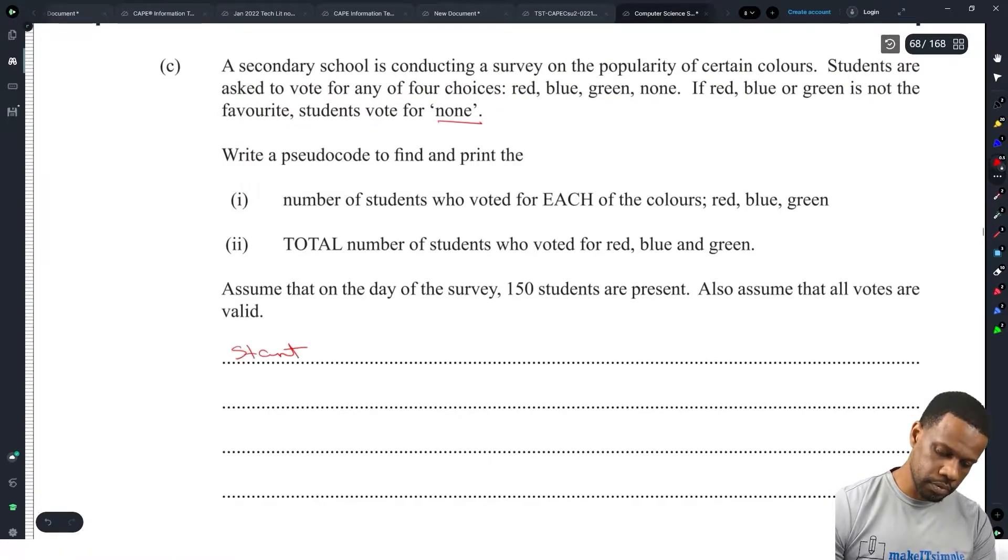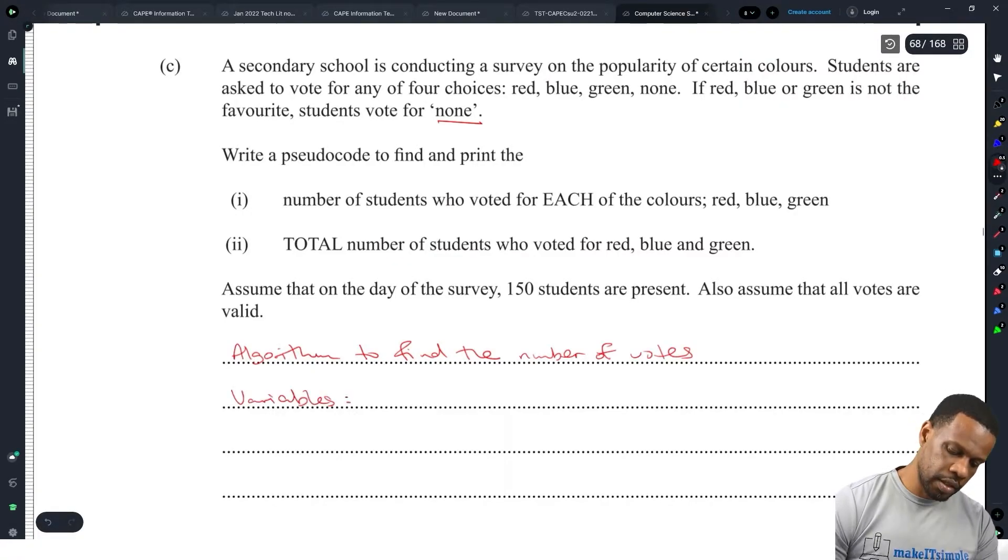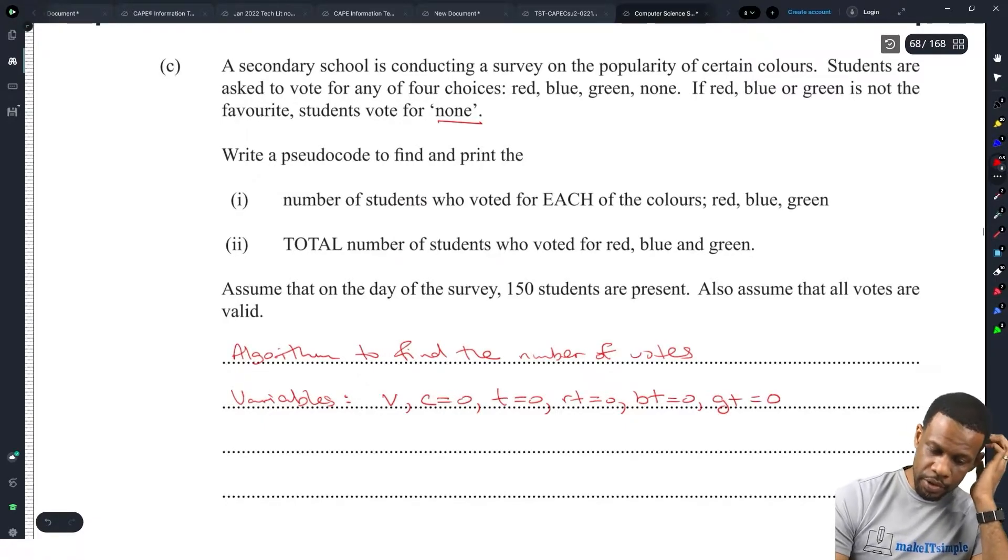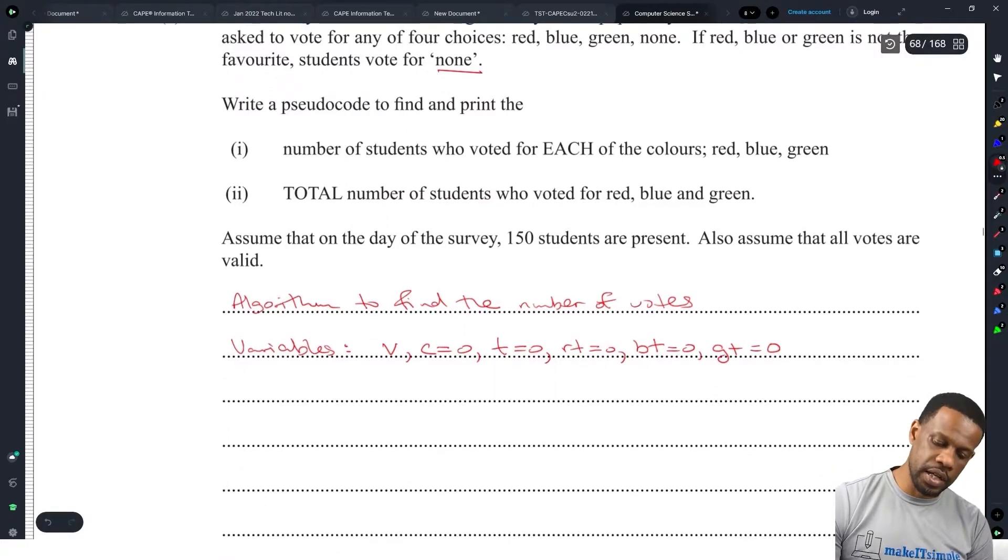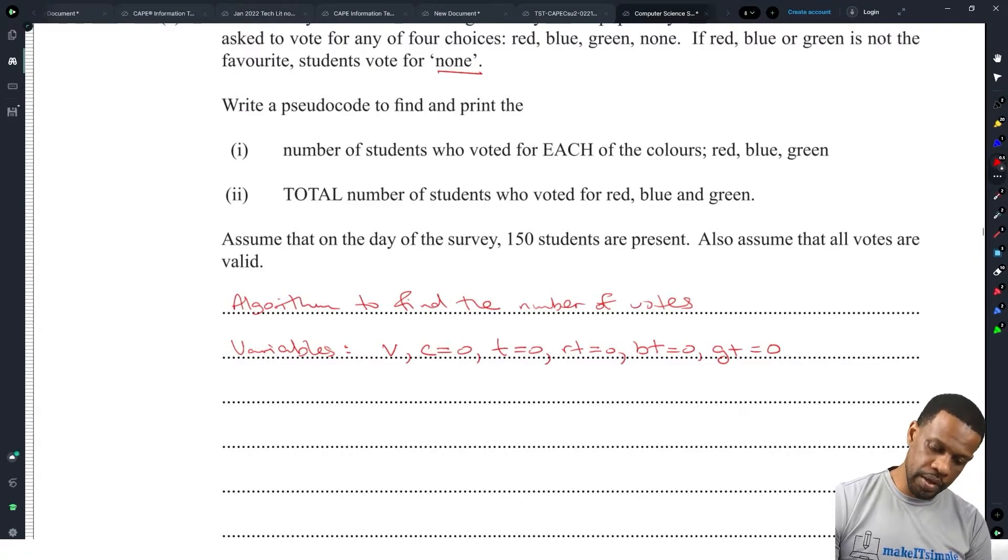Alright, let's go start. No, I should list all the variables. Let's do the standard way: algorithm to find the number of votes. Variables. The variables we need to have here would be a vote, a counter set to zero, total set to zero. Then we need to find the total for each one: R total, blue total, and green total. We'll see when we go to the answer sheet if they're giving marks for initializing variables. And then we have the grand total.